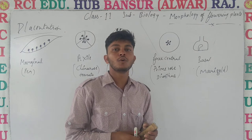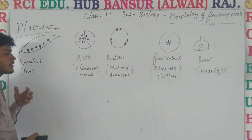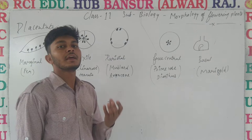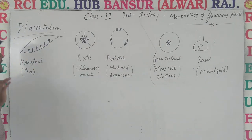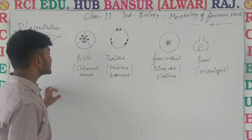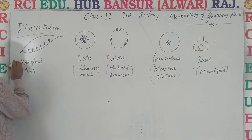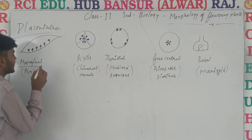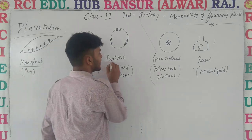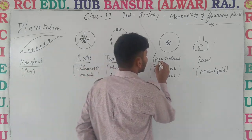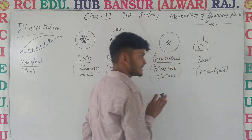The arrangement of ovules in the ovary — ovary की अंदर ovules का जो arrangement होता है — is known as placentation. The placentation is of five types: number one is marginal, number two is axile, number three is parietal, number four is free central, and number five is basal.